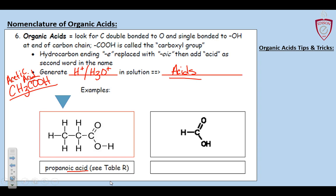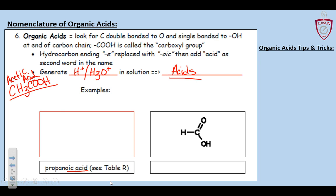Here's what it would look like when I replace it: a C double bonded O with an OH. You can put the OH right next to it — you don't have to have a dash in there. Now I'm going to go to the next piece — can we circle that functional group? That's what makes this molecule different from a regular hydrocarbon.